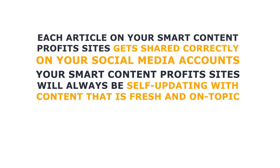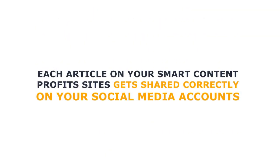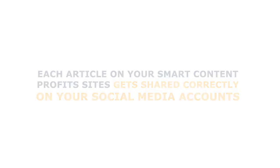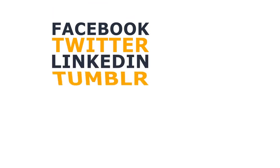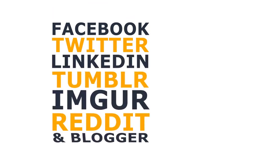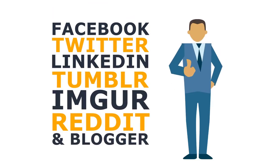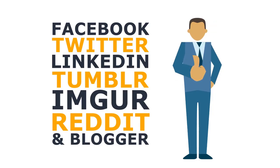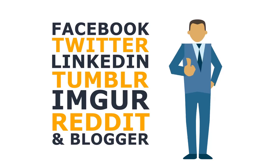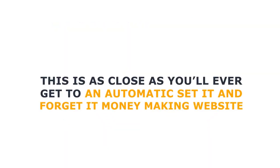No worrying about social media sharing. Each article on your Smart Content Profits sites gets shared correctly on your social media accounts — Facebook, Twitter, LinkedIn, Tumblr, Imgur, Reddit, and Blogger — so you can reel in valuable viral traffic and link backs. Plus, your social media accounts will get more engagement. This is as close as you'll ever get to an automatic, set-it-and-forget-it money-making website, because I designed it that way. I wanted to work as little as possible, and I'm assuming you feel the same way.